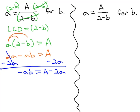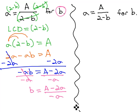Finally, to get the b alone that we're solving for, we just need to divide by negative a to undo the multiplication on both sides. This gives us b is equal to capital A minus 2a over negative a.